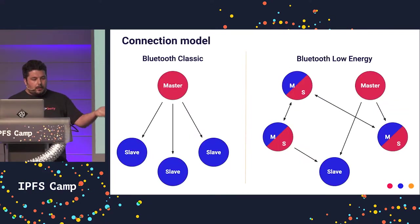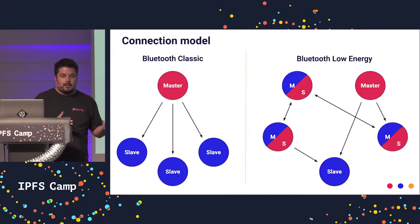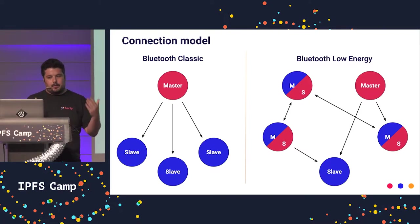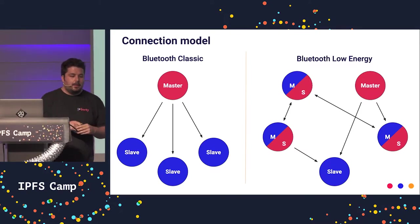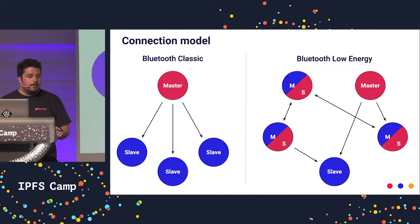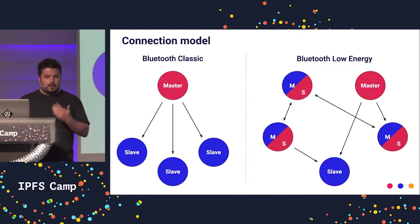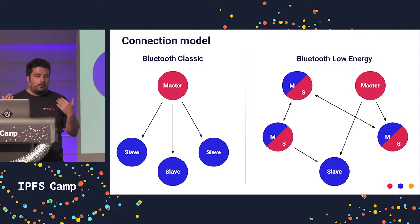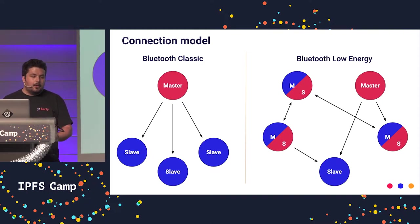The difference between connection models: in Bluetooth classic you can only act as a master or a slave. If you are a master you can have up to seven slaves. In Bluetooth Low Energy you can act as a master, as a slave, or both at the same time — so it's obviously a lot more peer-to-peer friendly.